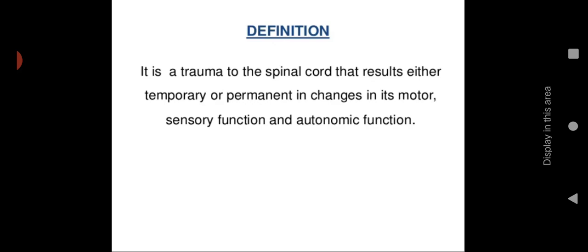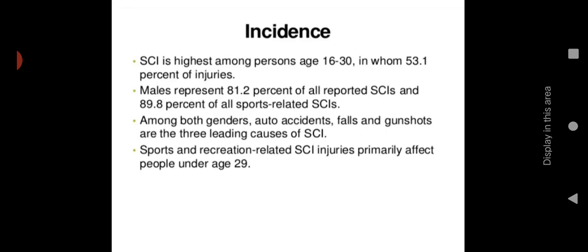Regarding incidence: spinal cord injury is highest among persons aged 16 to 30, accounting for 53.1 percent of injuries. Males represent 81.2 percent of all reported cases and 89.8 percent of all sport-related spinal cord injuries. Males are at greater risk due to increased activity levels, and 89 percent of sport-related spinal cord injuries occur in this age group.